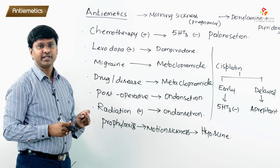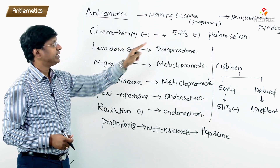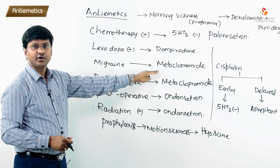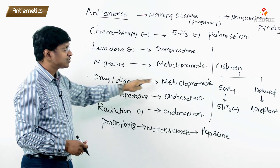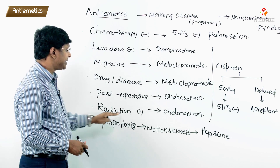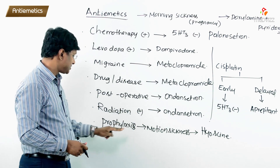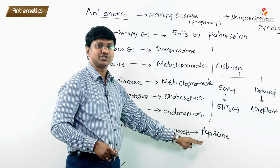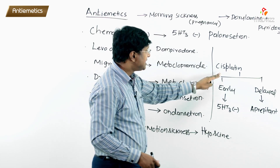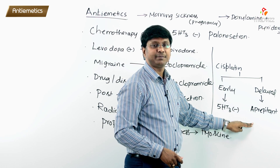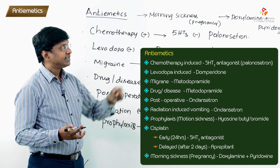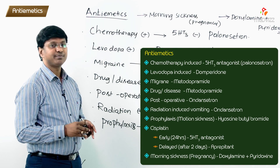To summarize: chemotherapy-induced vomiting — palonosetron; levodopa-induced vomiting — domperidone; migraine-associated vomiting — metoclopramide; drug or disease-induced vomiting — metoclopramide; postoperative vomiting — ondansetron; radiation-induced vomiting — ondansetron; motion sickness prophylaxis — hyoscine butylbromide; cisplatin-induced early vomiting — 5-HT3 antagonist; cisplatin-induced delayed vomiting — aprepitant; morning sickness in pregnancy — doxylamine plus pyridoxine.